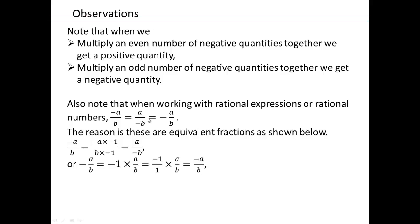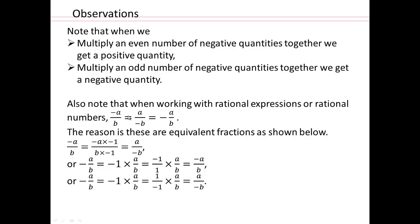So that's why all three of these things are equal. We can also do the same here — this time write negative 1 as 1 over negative 1, multiply it out, and you get a over negative b. So you can see how, as long as there is one negative sign, you can put it in the numerator, the denominator, or out front.